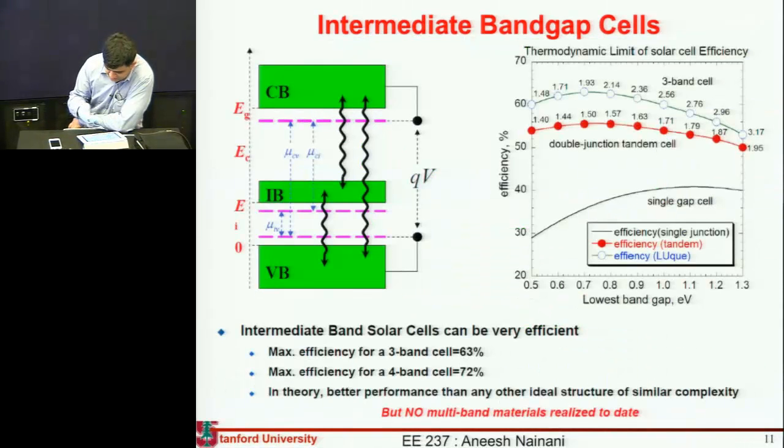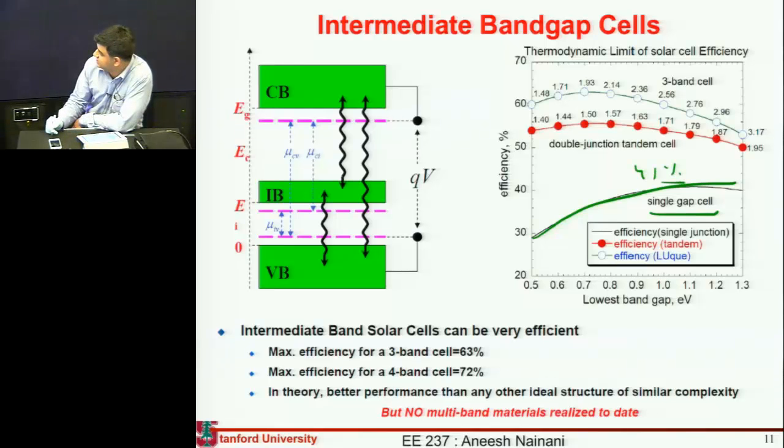If I have a single bandgap cell, I essentially get an efficiency maximum around 41% at concentrated radiation, at a radiation of 1,000 suns. If I make a double junction tandem, it depends upon the bandgap of those two individual cells, but I can get efficiency close to 52%, 53% kind of efficiency.